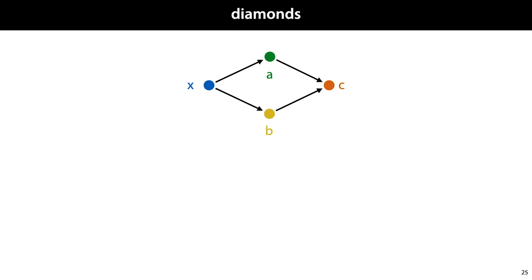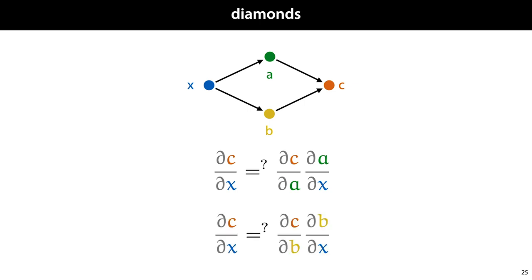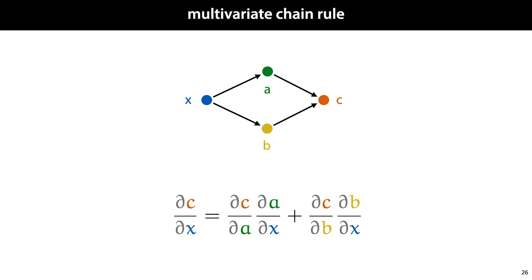How do we apply the chain rule? Do we apply it over a, saying that the derivative of c with respect to x is that of c over a times that of a over x? Or do we apply it over b, saying that the derivative of c over x is that of c over b times that of b over x? For such cases, we need the multivariate chain rule. It's very simple: to work out the derivative of a function with multiple inputs, we just take a single derivative for each input, treating the others as constants, and we sum them. So the answer is that we do both and sum the results.